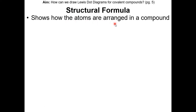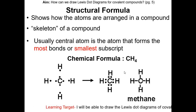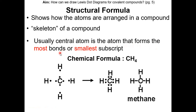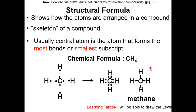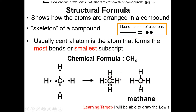For covalent compounds, the Lewis dot diagram indicates the structure, known as the structural formula. It shows how the atoms are arranged in the compound — think of it like the skeleton of the compound. The central atom is usually the atom that forms the most bonds or has the smallest subscript. In CH4, carbon has the smallest subscript, so it's in the center. Two dots or a pair of electrons is equivalent to one bond. It is better to draw bonds with lines than with dots.